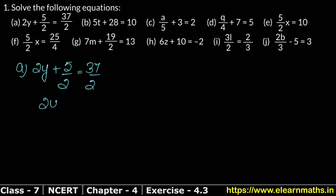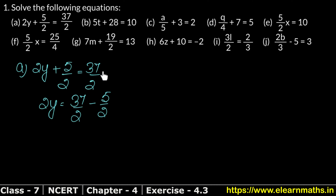2y is on the left side and 37/2 is on the right hand side. We will move 5/2 from the left side to the right hand side. When a value moves from one side to the other, its sign changes — plus becomes minus.